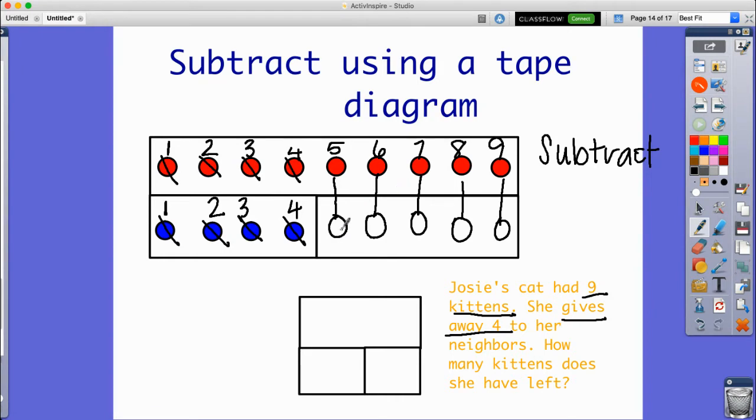Now I can count them. One, two, three, four, five. This means that Josie must still have five of the kittens.